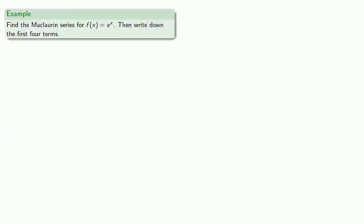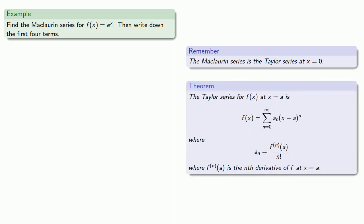Now there's about three times in all of mathematics where you'd want to find the Taylor or Maclaurin series from the theorem. This is one of them. Let's find the Maclaurin series for f(x) equals e to the x, and then write down the first four terms. Remember, the Maclaurin series is the Taylor series at x equals 0. The only reason it's useful in this case is that e to the x and all of its derivatives are e to the x. And so this nth derivative has a nice formula.